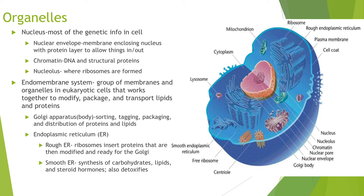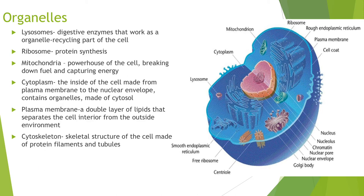The endoplasmic reticulum, or ER, has two parts: the rough ER and the smooth ER. The rough ER has ribosomes and synthesizes proteins that are then modified and sent to the Golgi apparatus. The smooth ER is involved in the synthesis of carbohydrates, lipids, and steroid hormones, and it also has detoxifying properties. Lysosomes contain digestive enzymes and act as an organelle recycling center — if another organelle has no use to the cell, the lysosome will break it down.